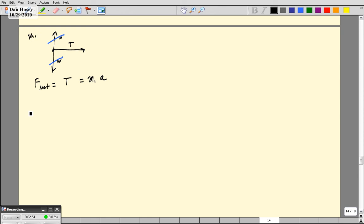Now let's look at M2. M2, we have two forces. We have a weight force down, which is M2 times G, and then we have an upward force, tension. This magnitude of tension is the same as the tension that was up here in the first part. So when I write Newton's second law for this, we're going to get F net equals Mg minus T.